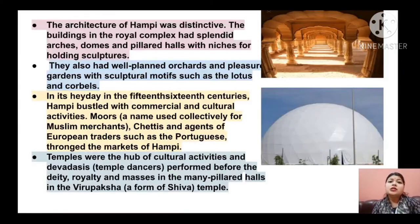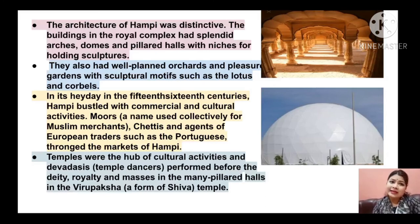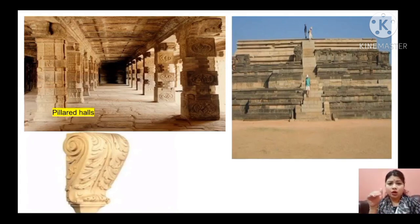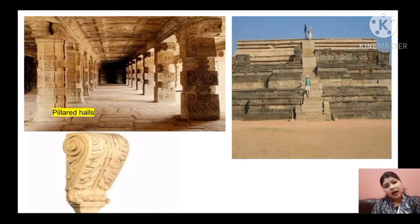They also had well-planned orchards and pleasure gardens with sculptural motifs such as the lotus and corbels. Basically they also had well-planned gardens and in the gardens there were many sculptural motifs like corbels. What is a corbel? You can see the second picture on the screen below the pillared halls — that picture is a corbel. So in the garden area you will find corbels.